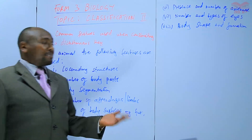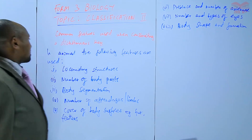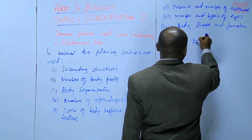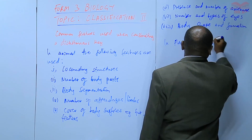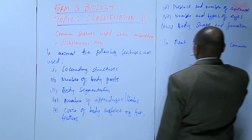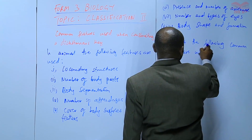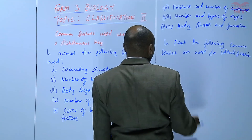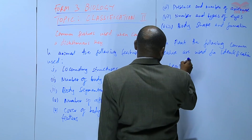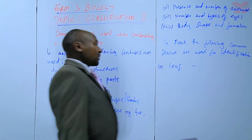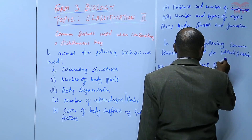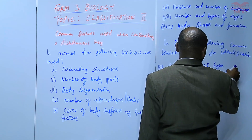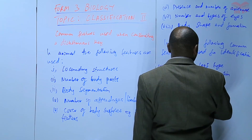It is also important that we look at features in plants. In plants, the following common features are used for identification. For example, we can start with the leaf. If we use the leaf, we can talk about the leaf type, as well as the leaf venation and the leaf arrangement.